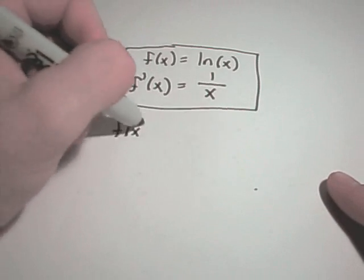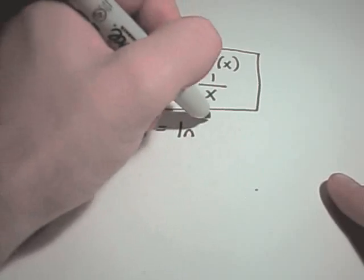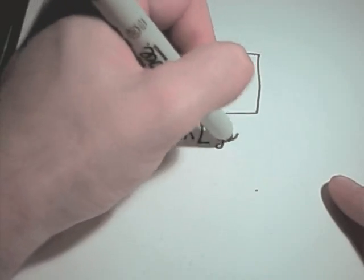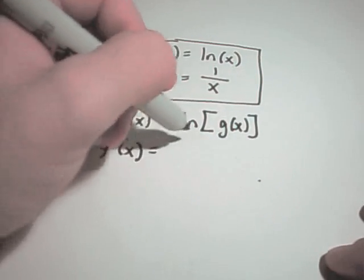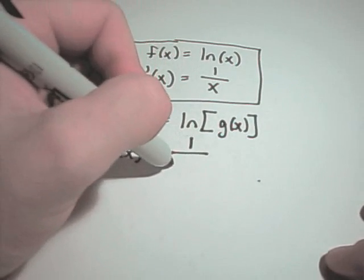If you have something more generic, suppose you have ln of something more complicated, say g(x).